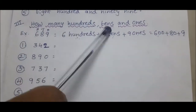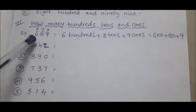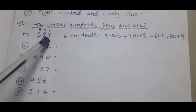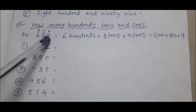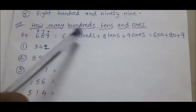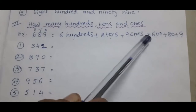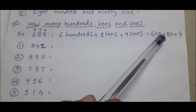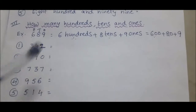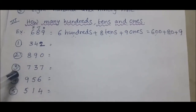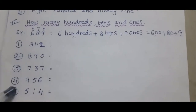Next: how many hundreds, tens, and ones? Example 689: 600 plus 8 tens plus 9 ones equals 600 plus 80 plus 9. One example is given for you. Remaining, follow the example.